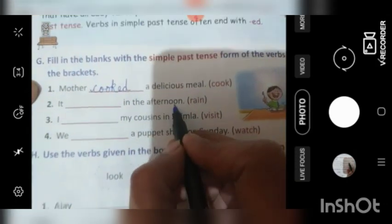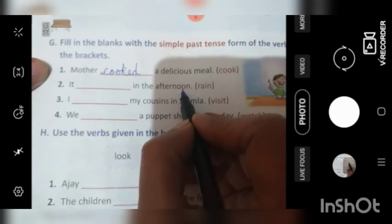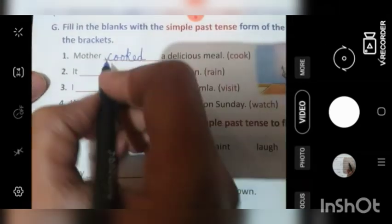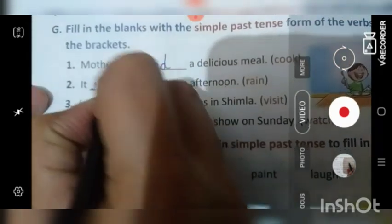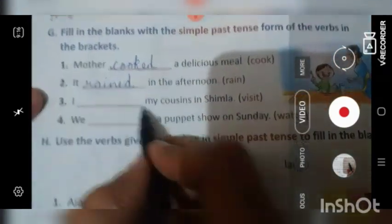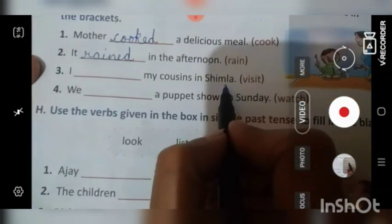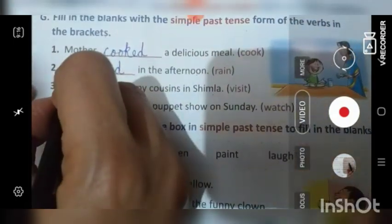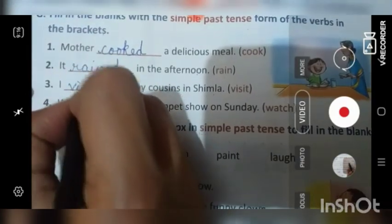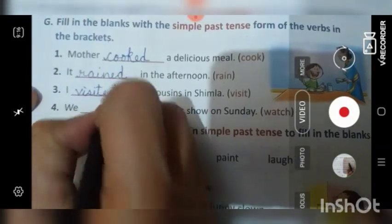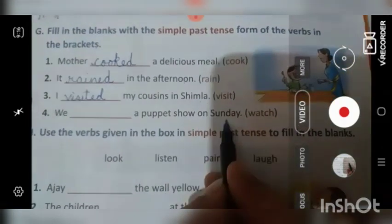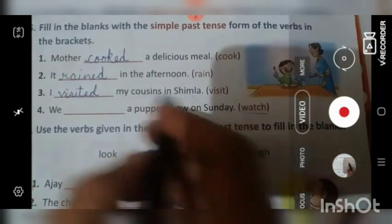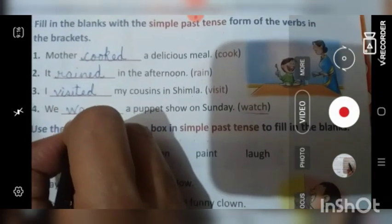It dash in the afternoon. Aap bolte ho na my cousins in Shimla. Mein apne cousins se Shimla mein mila tha. Hum past tense form laga raha hai. Toh milne ki inglish hai. Sorry milna ni, visit ki baat ho rhea hai, visit, gaya tha. Toh visited. We dash a puppet show on Sunday. Humne Sunday ko puppet show dhekha tha. Toh watch humara action word hai aur hum usko past tense mein karne ki liye kar dhenge. Watched.